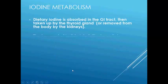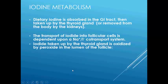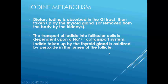Now let's see how iodine metabolism takes place. Dietary iodine is absorbed in the gastrointestinal tract of humans and then taken up by the thyroid gland, and then removed from the body by the kidneys. The transport of iodine into the follicular cells of the thyroid gland is dependent upon a Na+ and iodine co-transport system. Iodine taken up by the thyroid gland is oxidized by peroxidase in the lumen of the follicle, so I- gets converted into I+ using peroxidase.